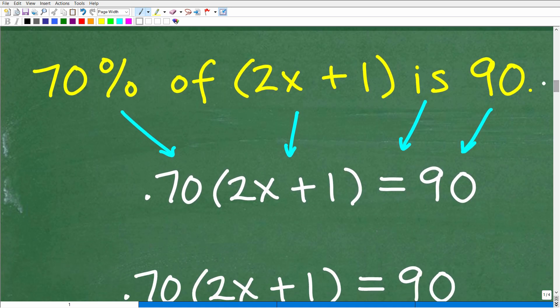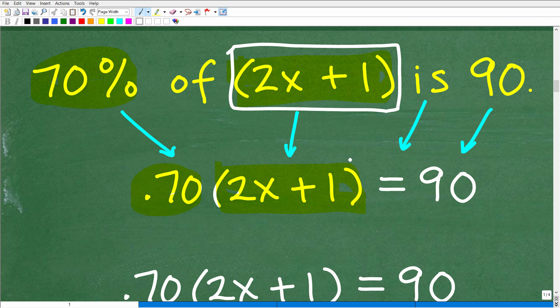All right. So 70% of 2x plus 1 is 90. So just like the last problem, what we want to do is convert or write our percent as a decimal. So that's going to be 0.70, so 70% of what? Well, in our last problem, it was 120, but we're not finding a percent of a number right now. We're finding the percent of this expression. So that's going to be 0.70 times whatever this number is. We don't know what that number is, but it's expressed as the value 2x plus 1. So, again, in algebra, when you have variables involved, this right here just represents a number. So in your mind's eye, just say, oh, this is some number. I'm going to figure out what this number is here in a second. But 70% of this number here is equal to 90.